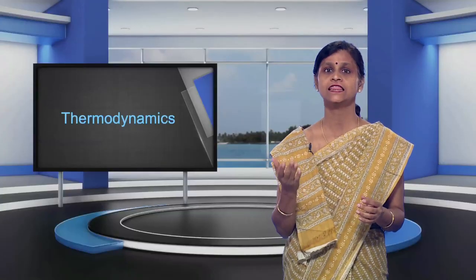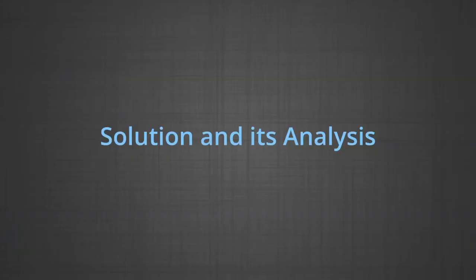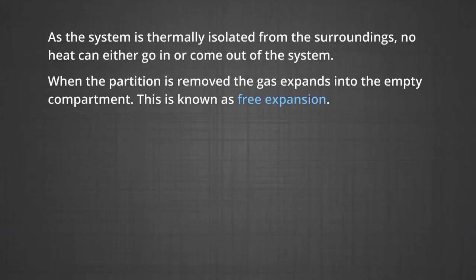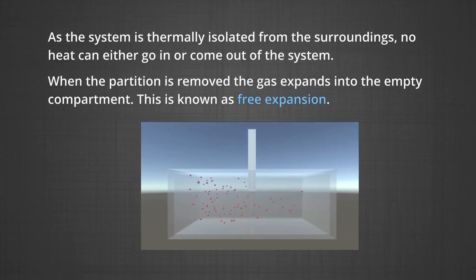When the partition is removed the gas expands to occupy the whole volume, as shown in the given figure. What will be the new temperature? And in the second part, how would the answer change if instead of an ideal gas we had a real gas? As the system is thermally isolated from the surroundings, no heat can either go or come out of the system.